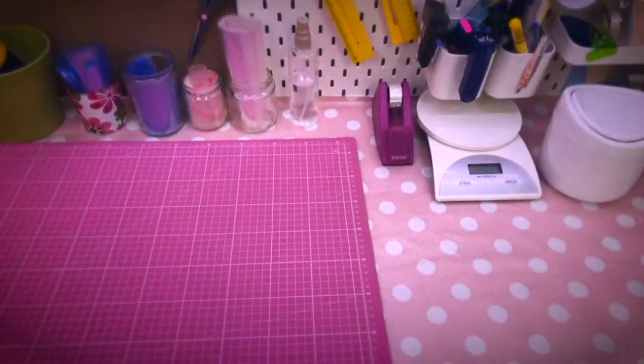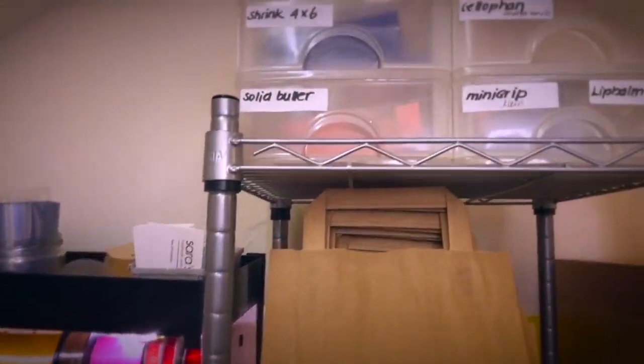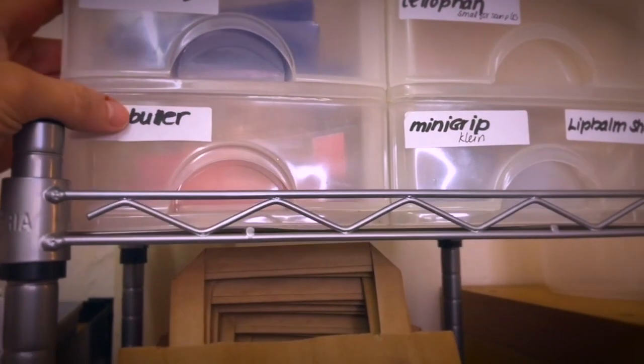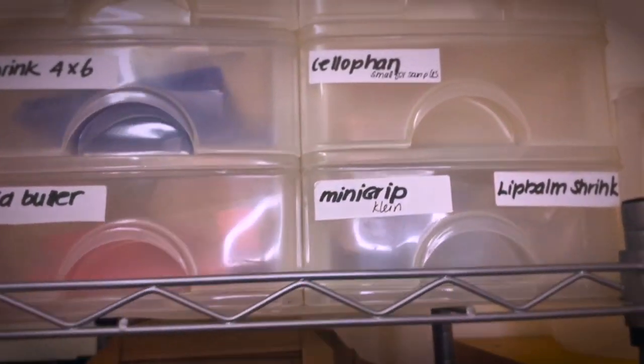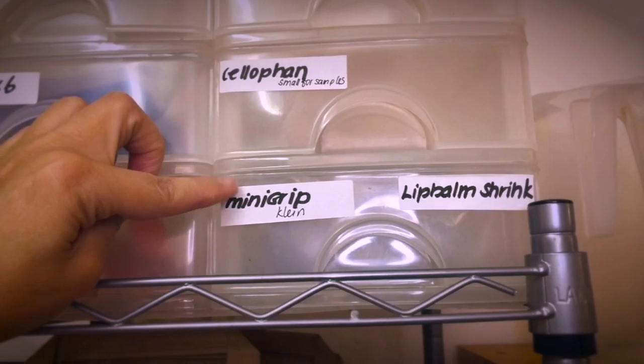Next to the table I have a shelf with a little box system holding more shrink wrap bags and shrink bags for lip balm tubes as well. Some paper bags and then here are some samples or little gifts that I can include in orders.